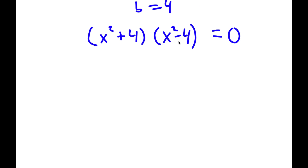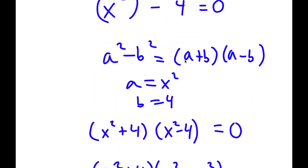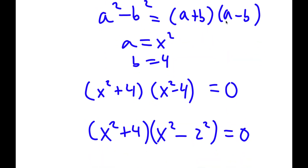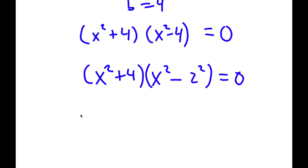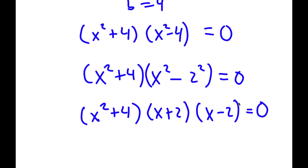And now for x squared minus 4, I can rewrite that as x squared minus 2 squared. Again, if I have something in the form a squared minus b squared, this is equal to a plus b times a minus b. So x squared minus 2 squared equals x plus 2 times x minus 2, which is equal to 0.